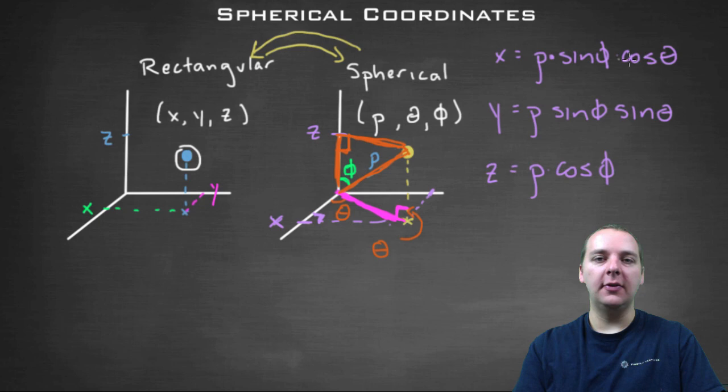You can't just say cosine theta, sine, or sine theta, cosine phi. You can't just mix and match them however you want. It's very important you're putting the right angles in the right places.